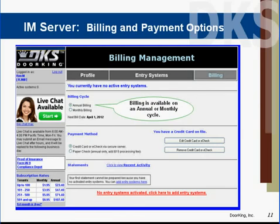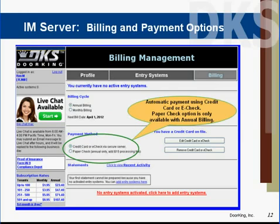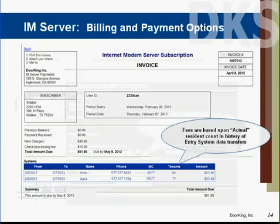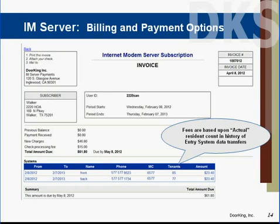Once you've registered for the DoorKing server you can set up the system and the billing on your billing management page of your login screen. You would select annual or monthly billing, then you would select credit card payment or e-check. If you selected annual billing you would have an option for a paper check but remember there is a $15 processing fee that applies. At any time you can view statements that show how many entry systems you have registered, what the monthly or annual fee is, and keep track of the payments.